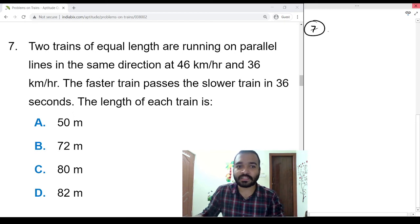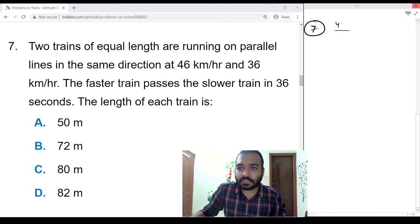Next problem. Two trains of equal length are running on parallel lines in the same direction at 46 km/h and another train is 36 km/h.